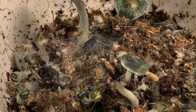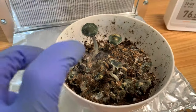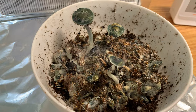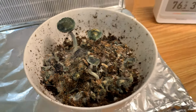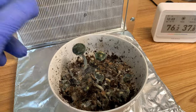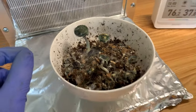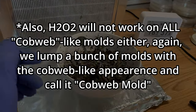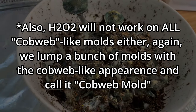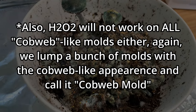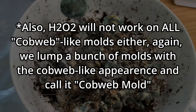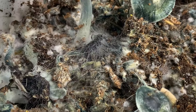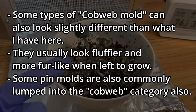Now to identify cobweb mold, it's very, very simple. A lot of people say you just put some hydrogen peroxide in there and it'll start sizzling — yeah, that's true. But you shouldn't even have to do that because it's so apparent due to the fact that it grows extremely fast. This popped up overnight.